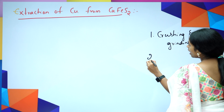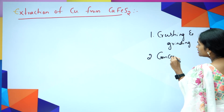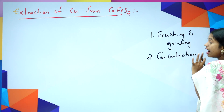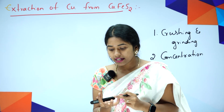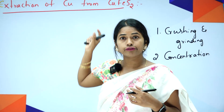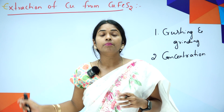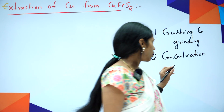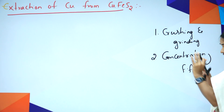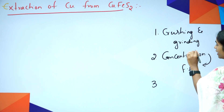The second step is concentration. What do you mean by concentration? Whatever ore we got, we should remove the impurities. Under concentration we study magnetic separation, froth flotation, gravity separation, and leaching. For sulfide ores we study froth flotation. Here CuFeS2 is a sulfide ore of copper — it is the main ore of copper — and here we do the froth flotation process.